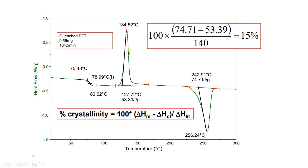As an example, here we have a DSC curve showing both cold crystallization and a melting peak. The calculated enthalpy of melting is 74.71 J/g and the enthalpy of crystallization is 53.39 J/g. We subtract this value per the equation, then divide by the enthalpy of 100% crystalline PET from the standard table to calculate the percentage crystallinity.